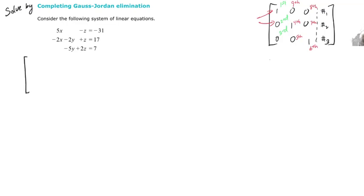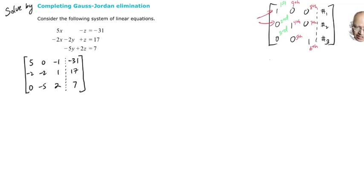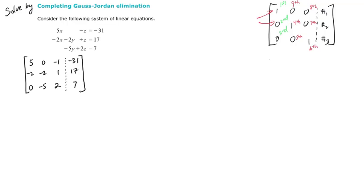The 3 by 4 augmented matrix contains: 5, 0, negative 1, and then where the equal signs are we draw a dotted line — negative 31; negative 2, negative 2, 1, 17; 0, negative 5, 2, and 7. Before Gauss-Jordan elimination you would do this with substitution or the addition method and it could be an organizational nightmare, so the cool thing about Gauss-Jordan elimination is that you can organize your work through small precise steps.